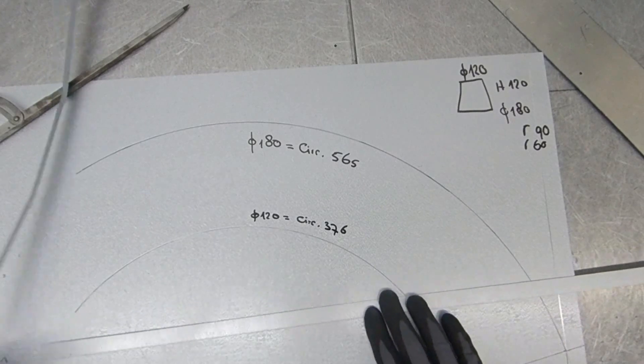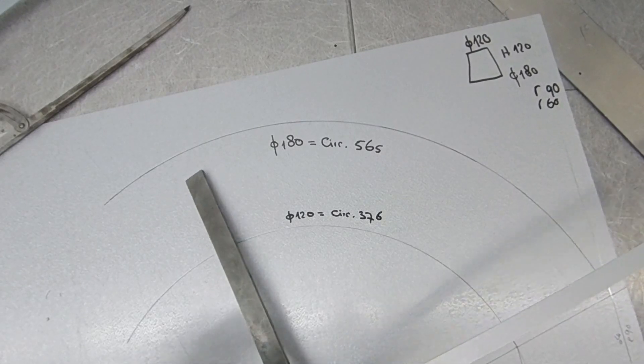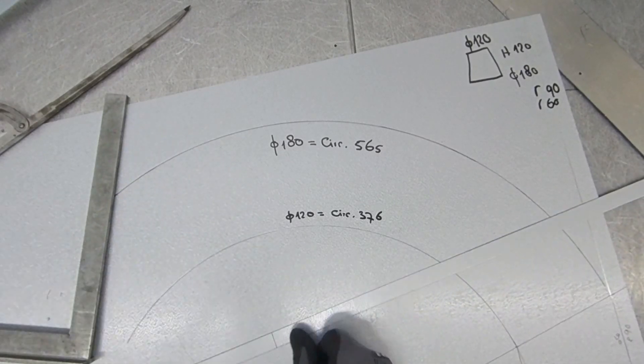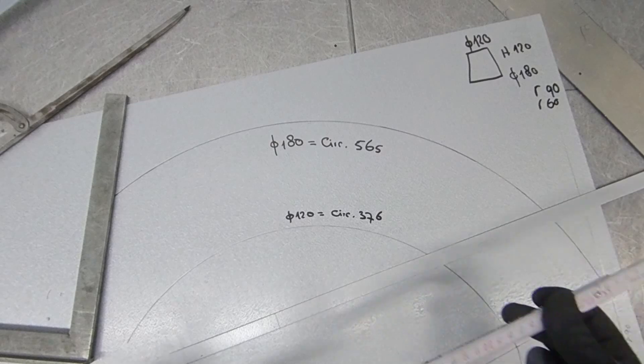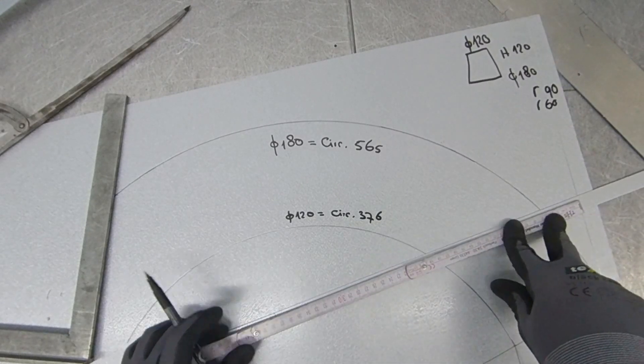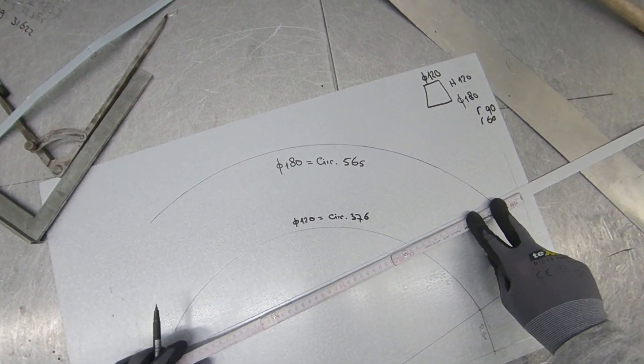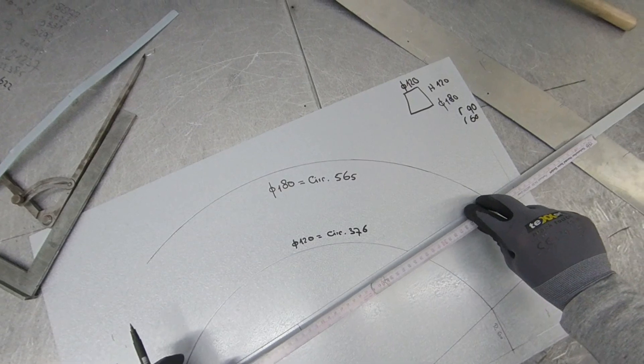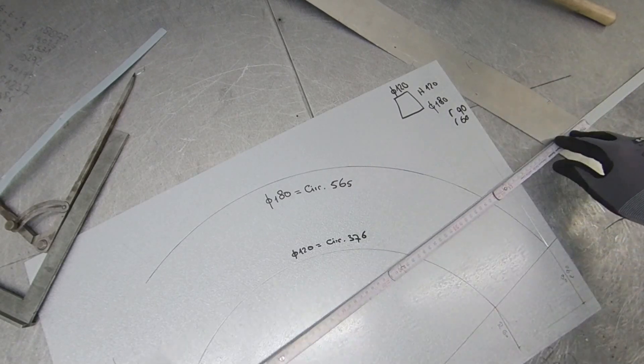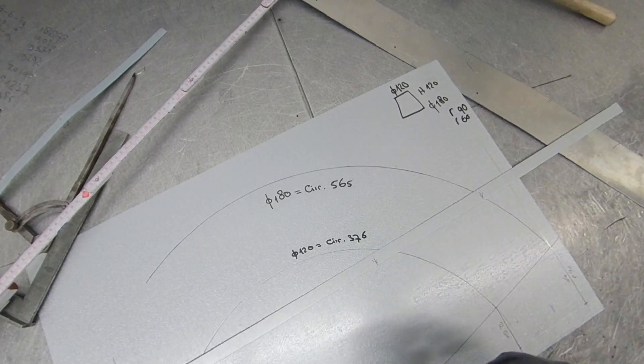I've got another metal strip here. I'm just going to pull a line somewhere, doesn't matter where, somewhere at the beginning. Now I'm going to measure here 376 - here's one. And the second one is 565. So this is the small one and this is the big one.